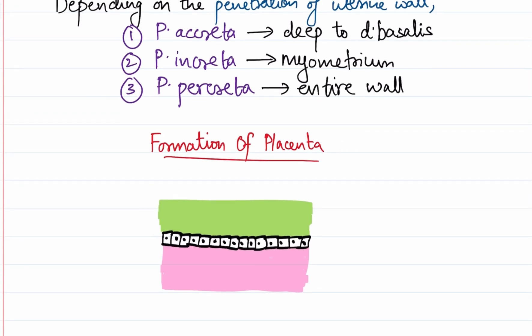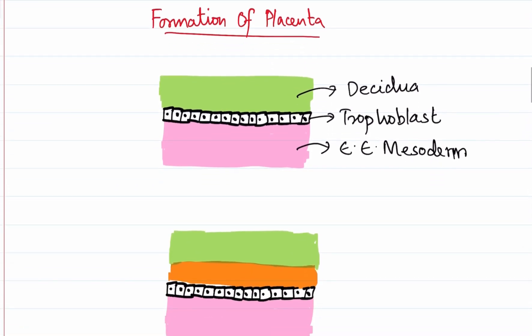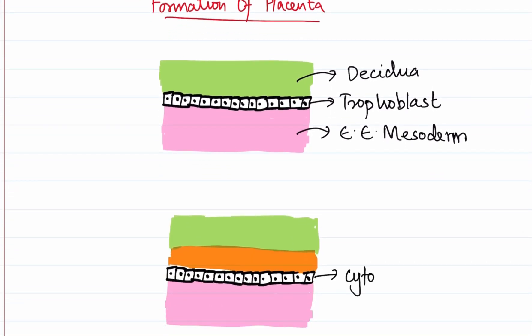In the second week of life, the embryoblast will develop. The inner cell mass will develop into hypoblast, epiblast, amnion, and yolk sac. Outside the embryo, an extra embryonic mesoderm will develop — shown in pink. Outside the extra embryonic mesoderm is the trophoblast, which develops into two parts: an inner cytotrophoblast and an outer syncytiotrophoblast. Outside of it we have our uterine endometrium, which after implantation is renamed the decidua — shown in green.